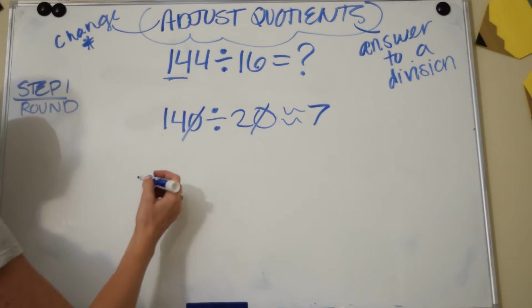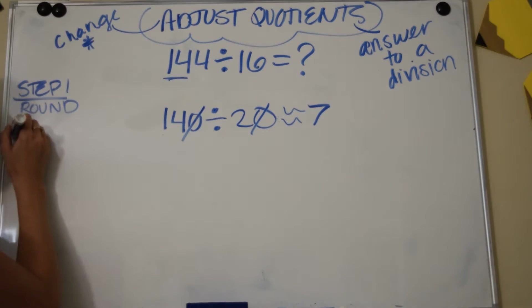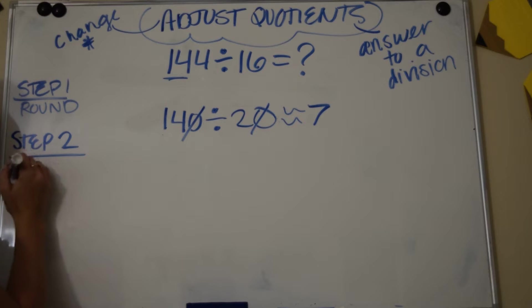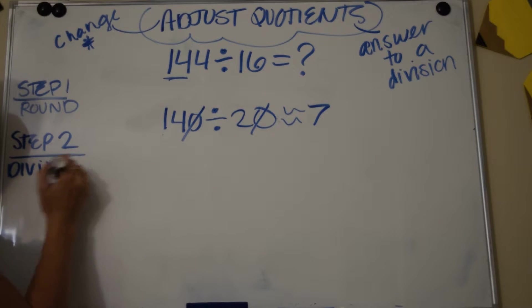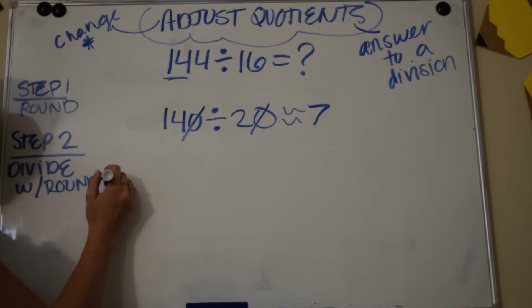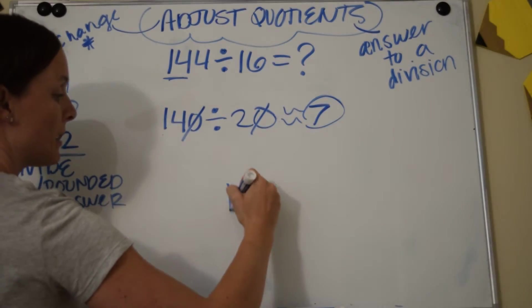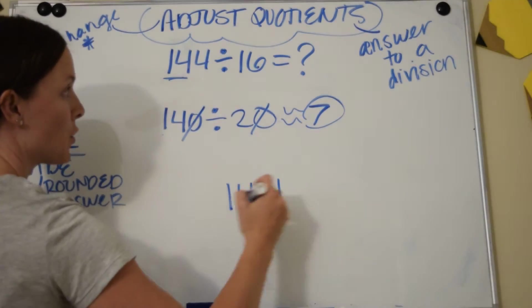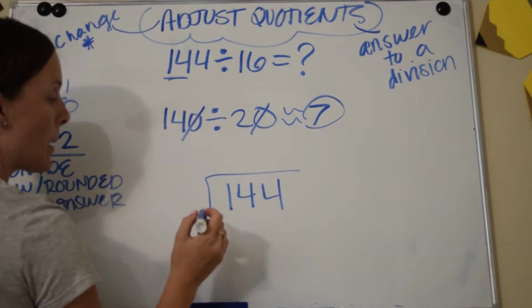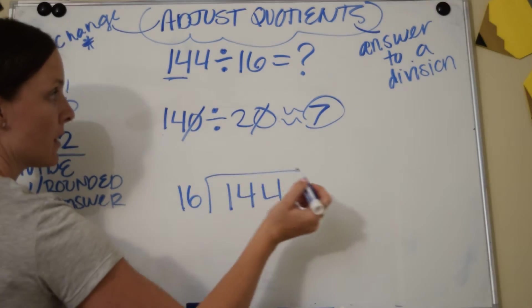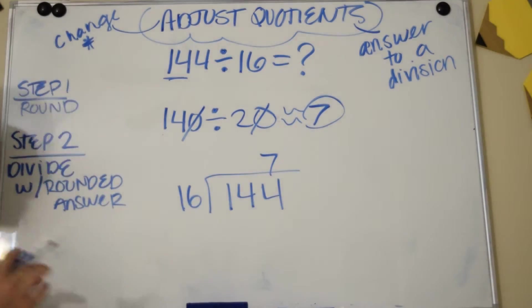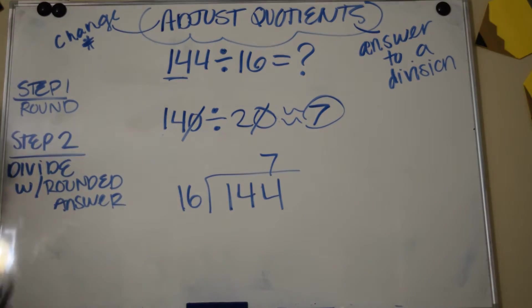So now we're going to take the original problem. Step 2: divide with rounded answer and see what we get. So our rounded answer was 7, so I'm going to see if that works. I'm going to see if 144 divided by 16 is 7, and it'll tell me how close I am and whether I need to go up or go down to find what this answer is.